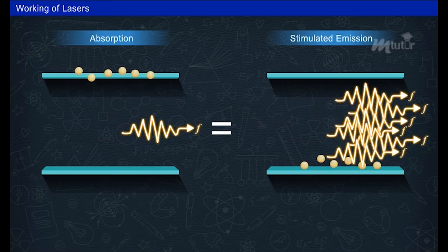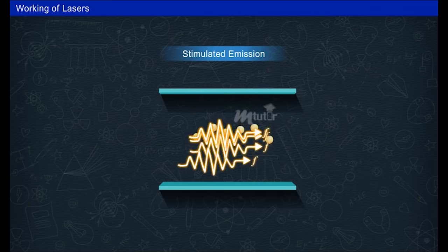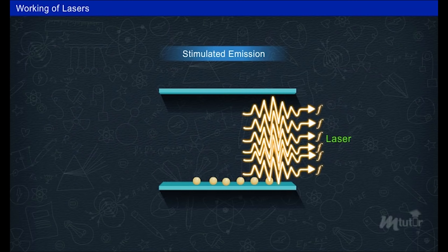Thus the net effect will be absorption of photons when more atoms are in the ground state. When stimulated emission dominates, that is when more photons are emitted than the absorbed photons, the laser light is produced.